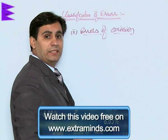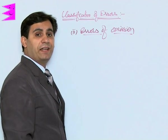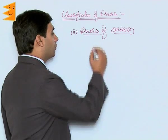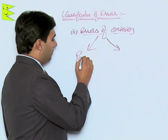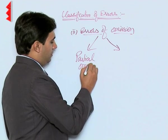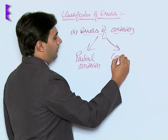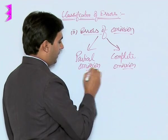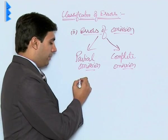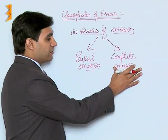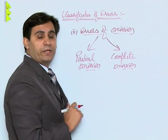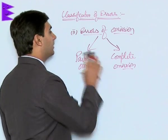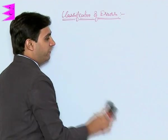The second type of error is errors of omission. As the name suggests, omission means something has been omitted — we have failed to record either a transaction altogether or the debit or credit aspect. It can be further classified as partial omission, where either the debit or credit aspect is omitted, or complete omission, where the whole transaction has been omitted.